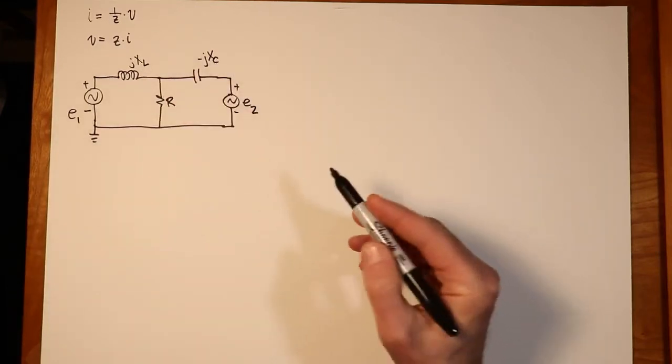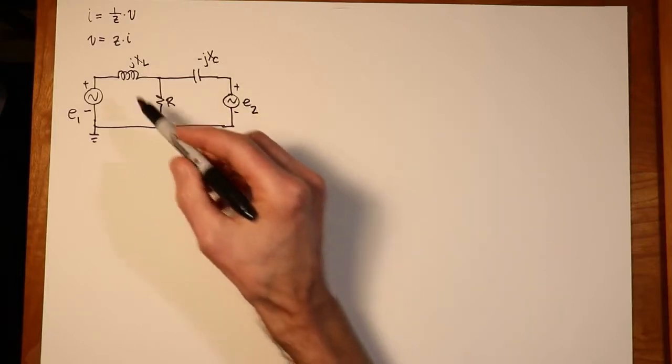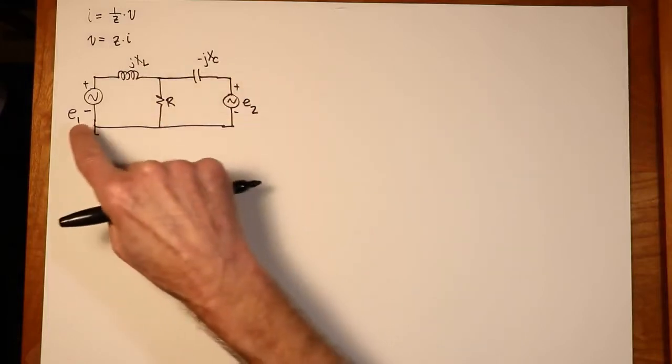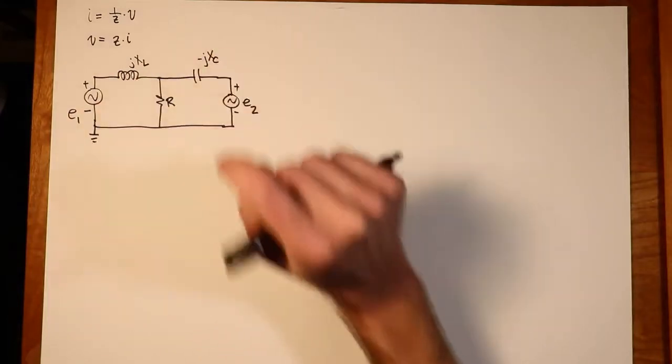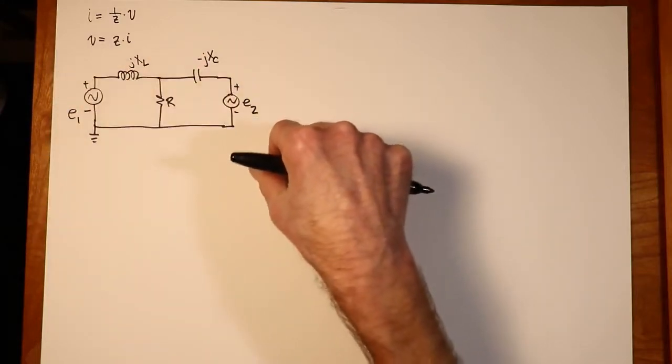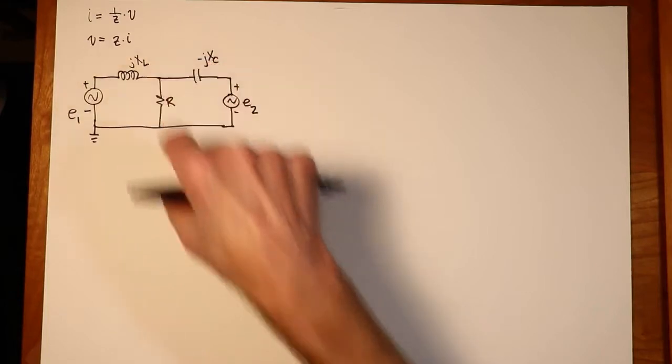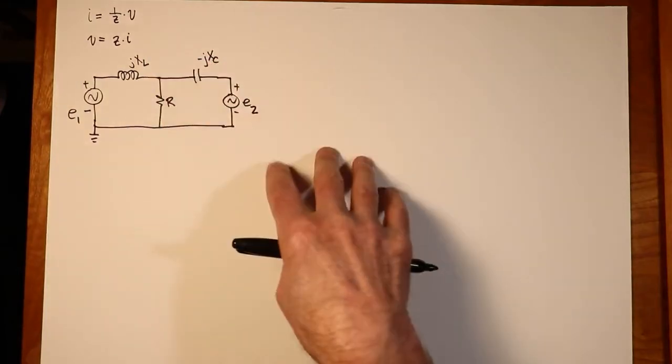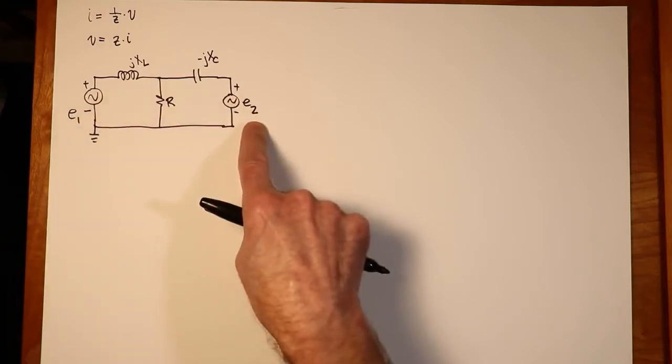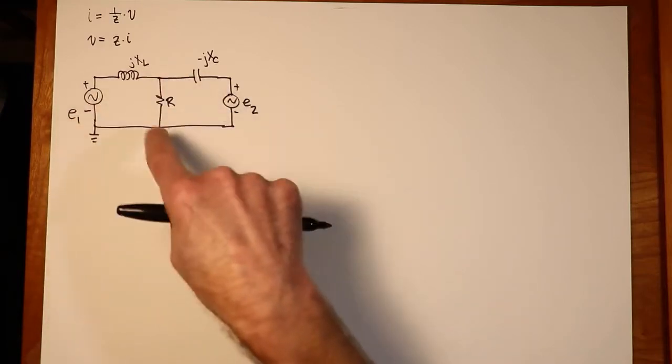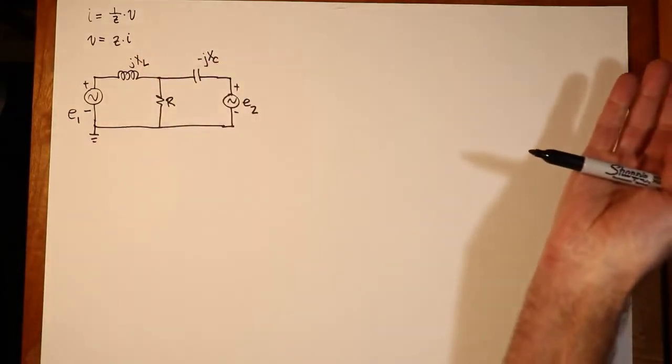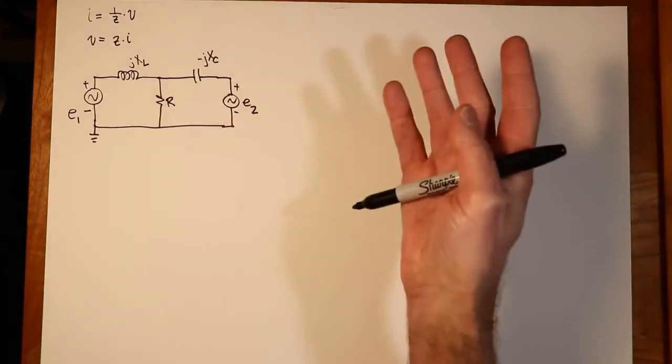We've already looked at a way of solving this, actually a couple of ways. You could do source conversions on these, turn these into current sources. The E1 and the inductor, E2 and the capacitor, turn those into current sources with parallel components. You'd have an all-parallel circuit. The other way to do that would be to use superposition. We would consider E1 by itself, consider E2 by itself, figure out the contributions to the output voltage, add them up, and of course the third way would be to use nodal.